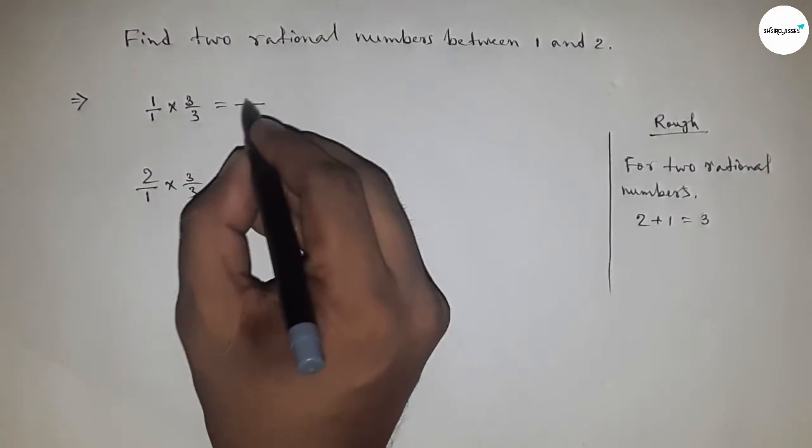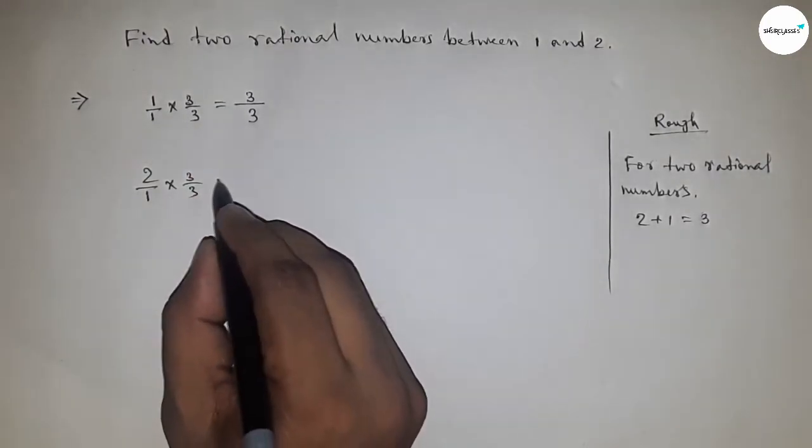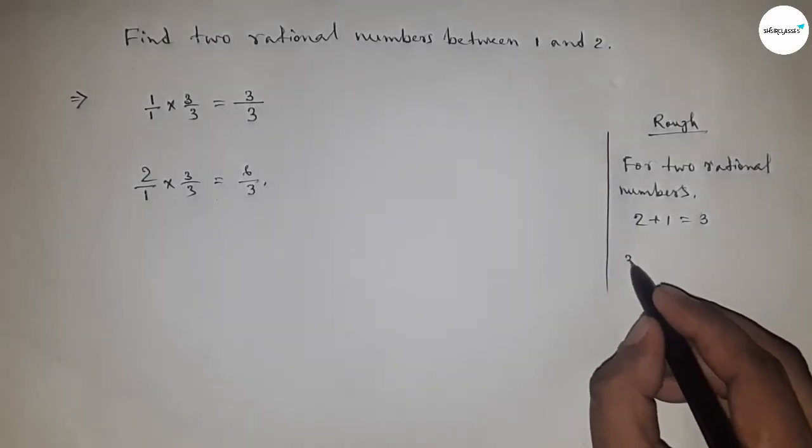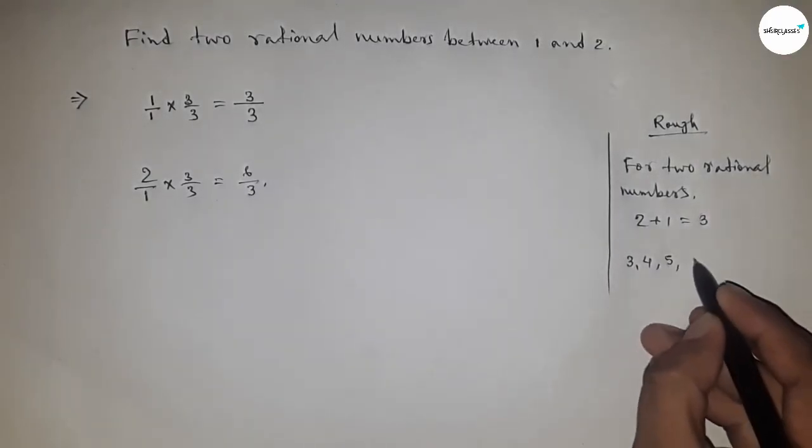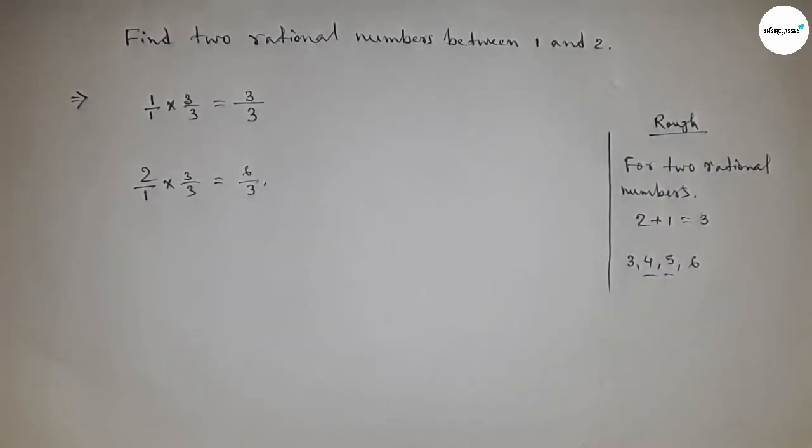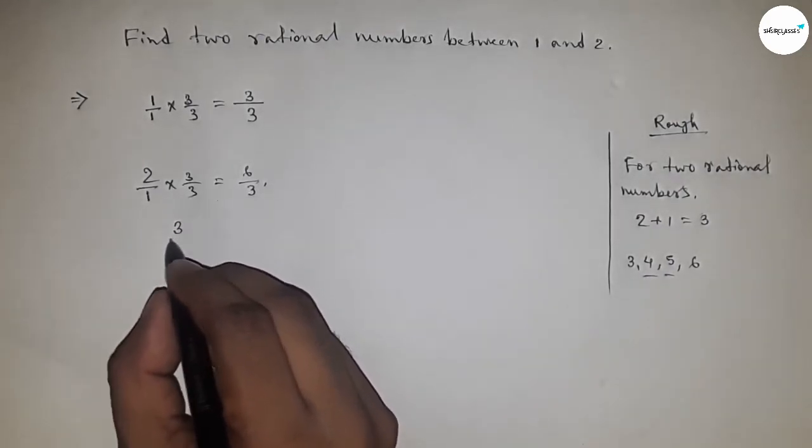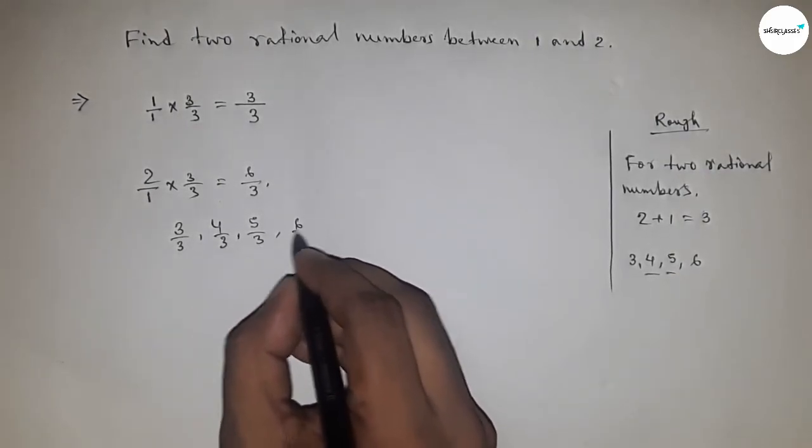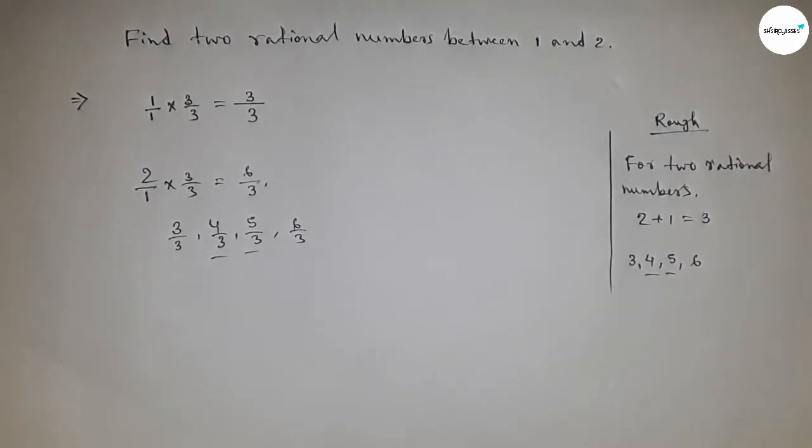So this is 3 upon 3 and this is 6 upon 3. Now 3, 4, 5, 6, so we got two numbers. By these two numbers we can form two rational numbers. So these are the two rational numbers.